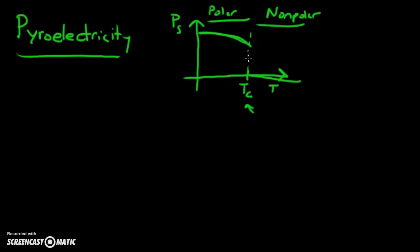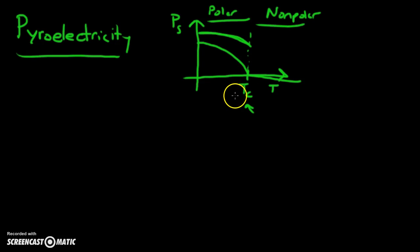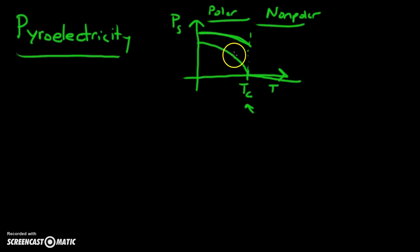This is called a second-order material when we have a smooth change, versus a first-order material where we hit a discontinuity of the polarization at the Curie temperature. If it smoothly changes to zero at the transition temperature, that is a second-order transition. As we change temperature we're changing polarization in the pyroelectric range, and there is a slope here as you can see.